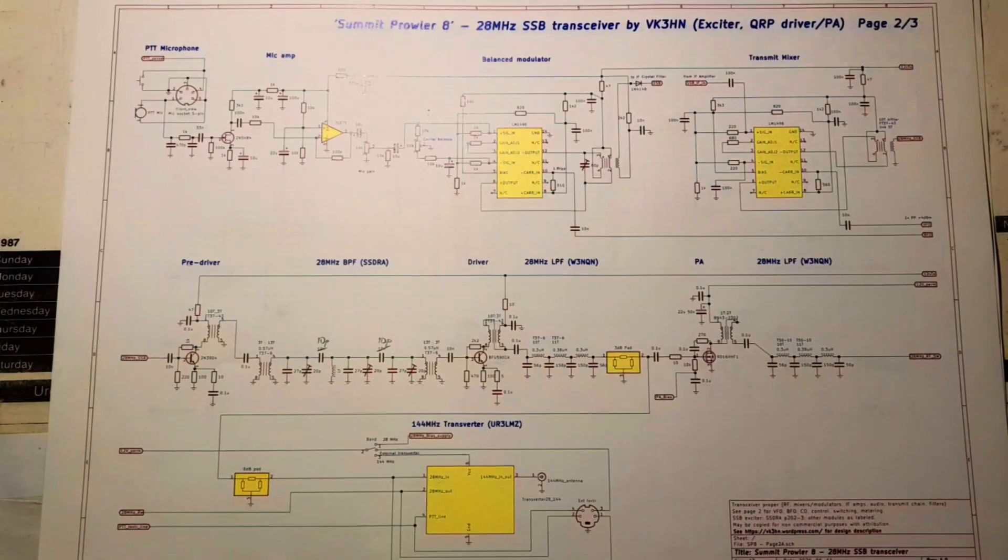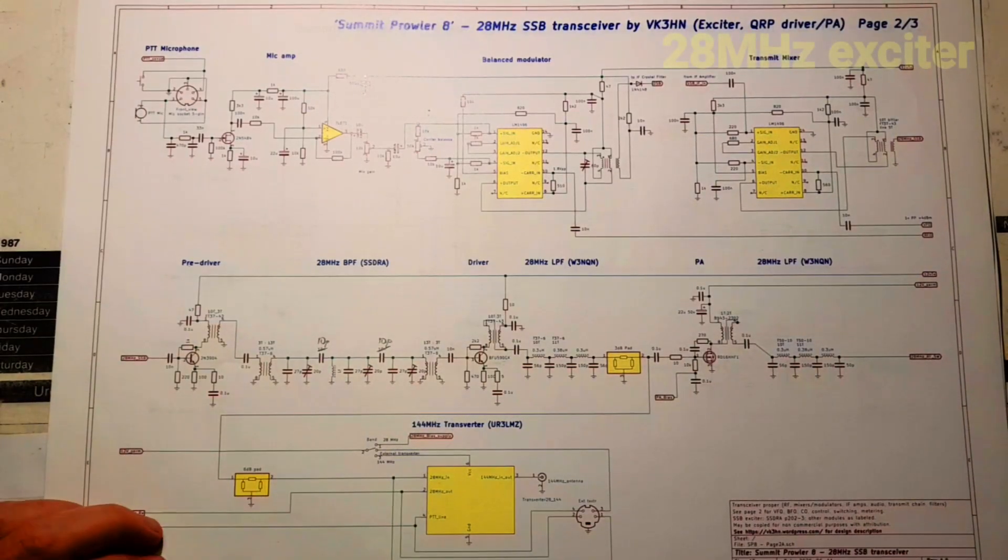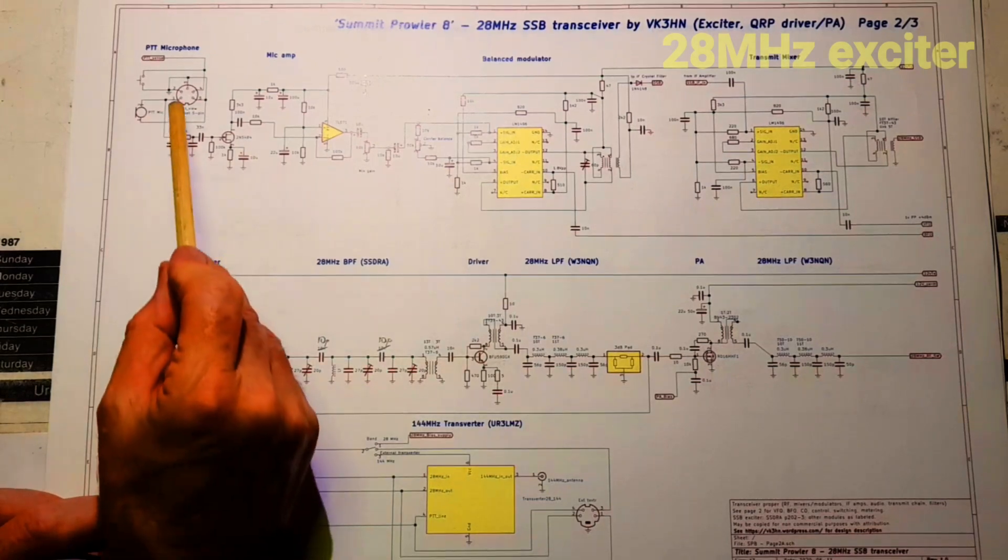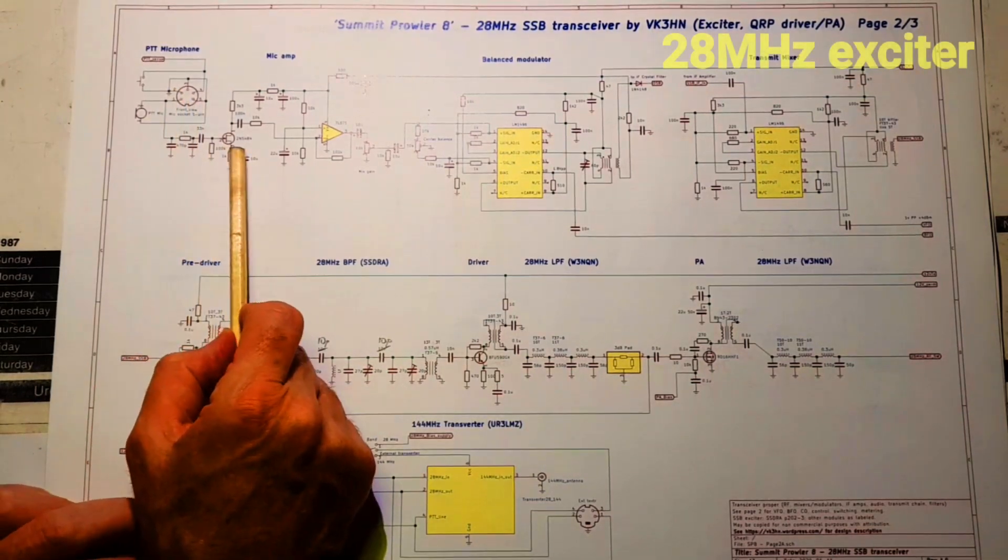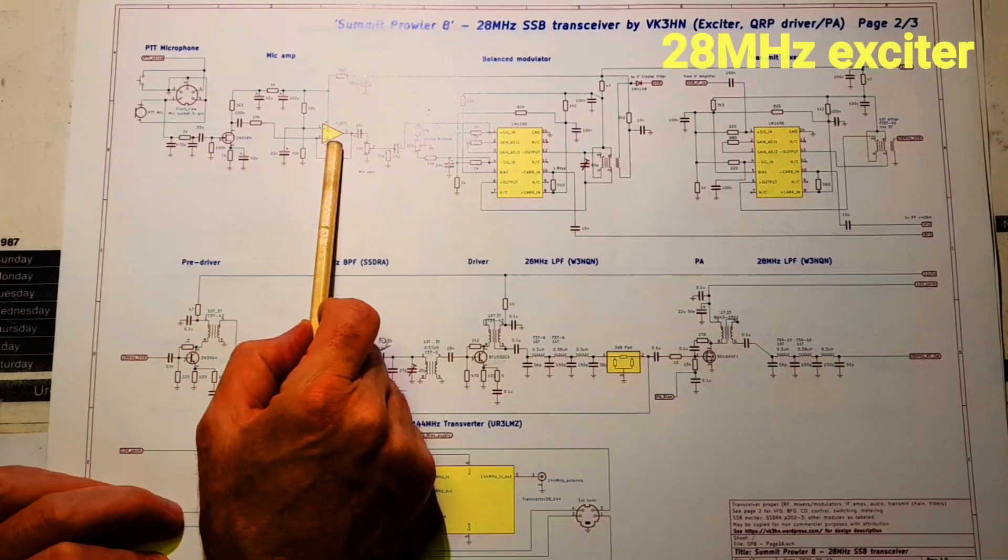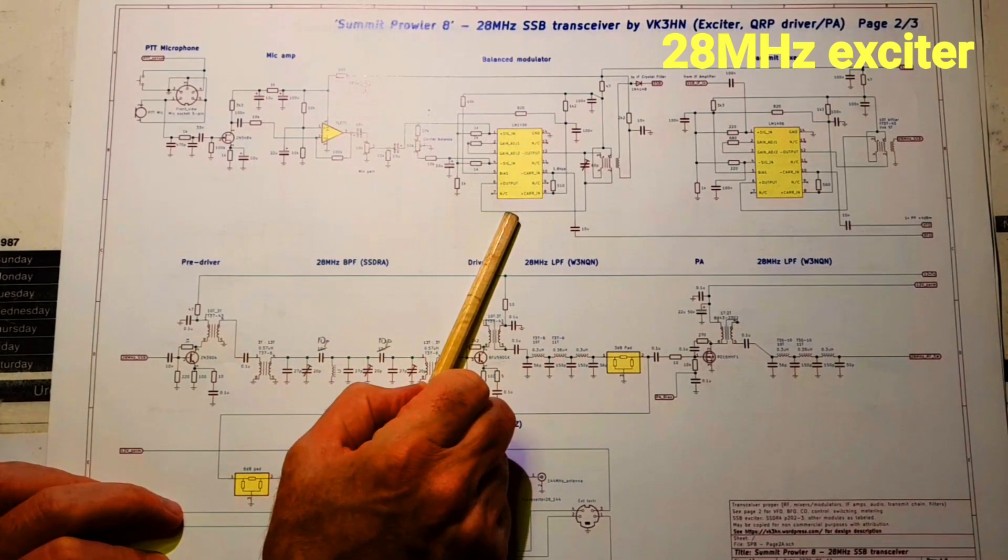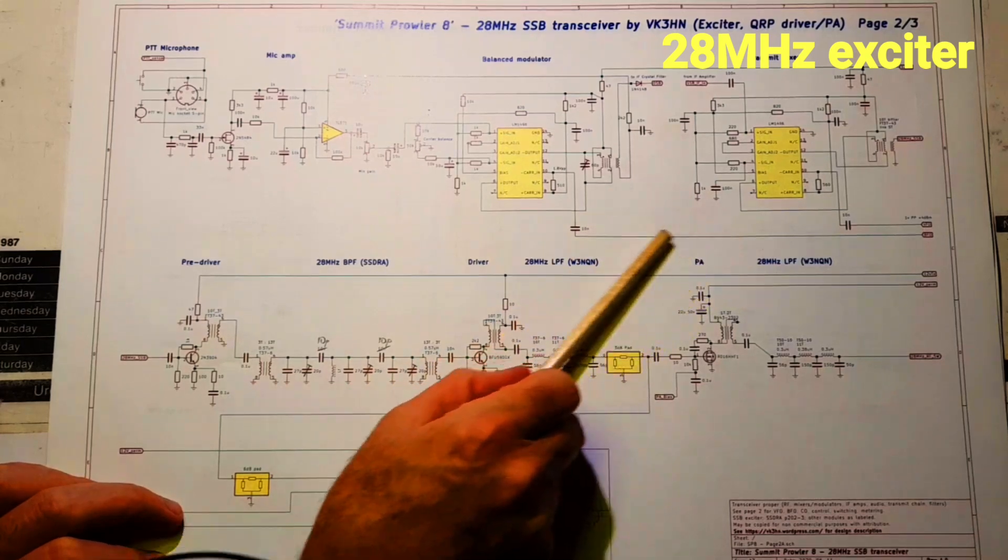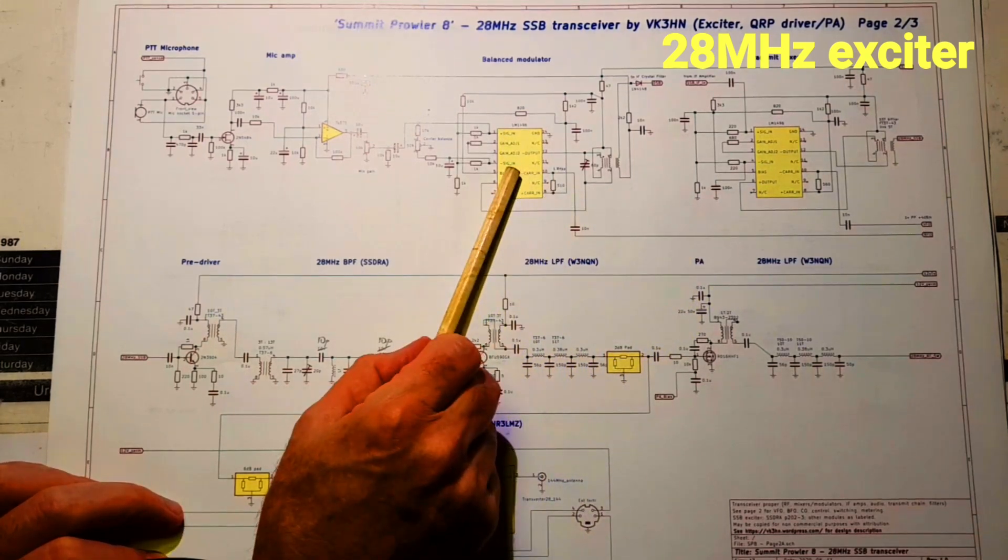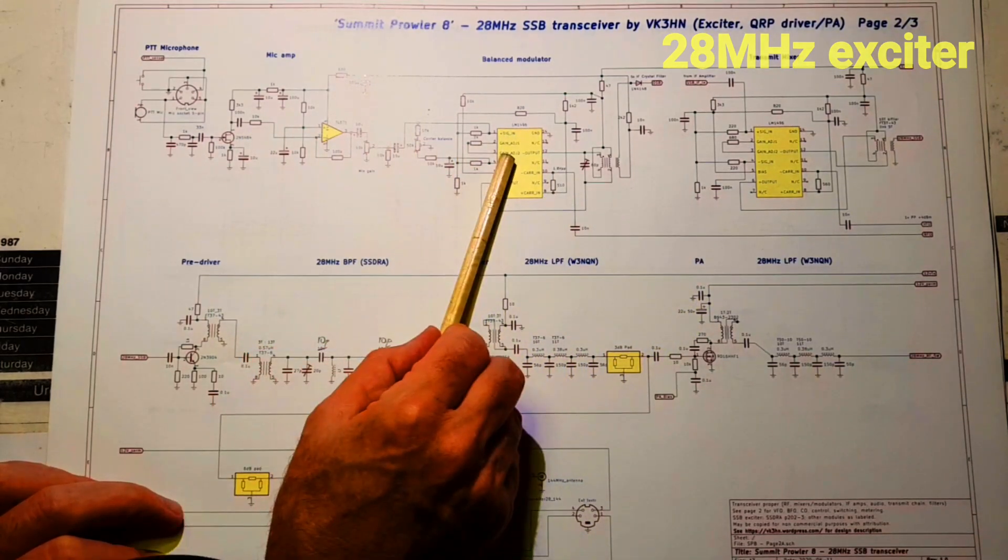Let's have a look at the transmitter or the exciter. From the microphone through a mic preamp, this is a JFET and a TL071. And then straight into a balanced modulator using the LM1496. The BFO on 8.9 MHz in here. Audio in the other port.